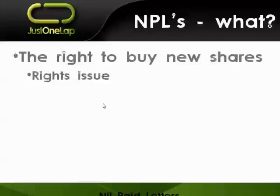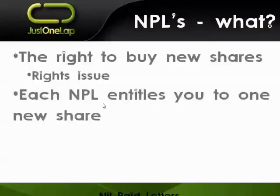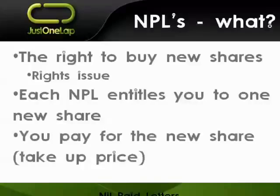A nil paid letter, as it arrives in your account, entitles you to buy one new share. It's very important that it's for the share which you already own. For example, you own SAB shares, they issue nil paid letters — that gives you a right to buy SAB shares. You had to have owned the shares, and secondly, it gives you the right to buy more SAB — you can't go and buy MTN or something like that. They give you the right to buy that new share, which means you have to pay for it. That's critically important, and there is something called a take-up price.